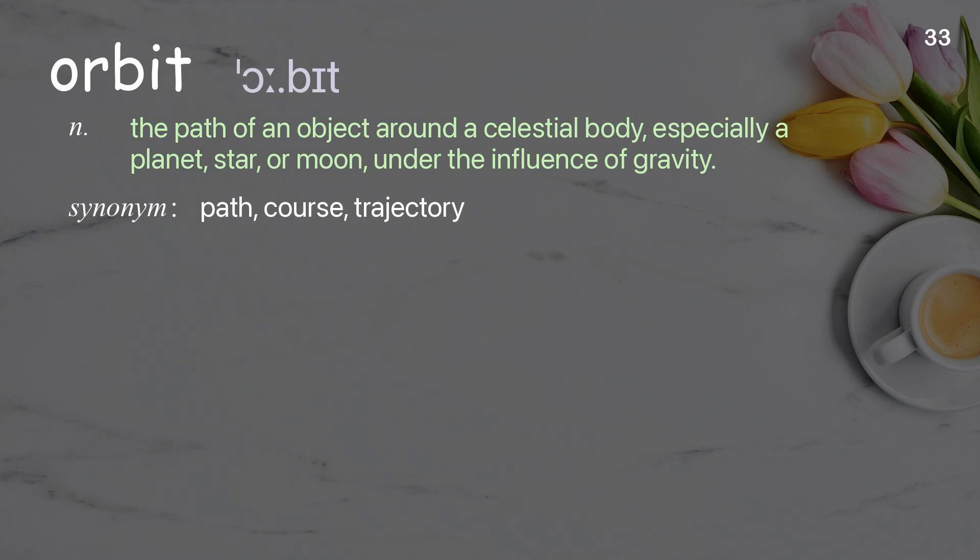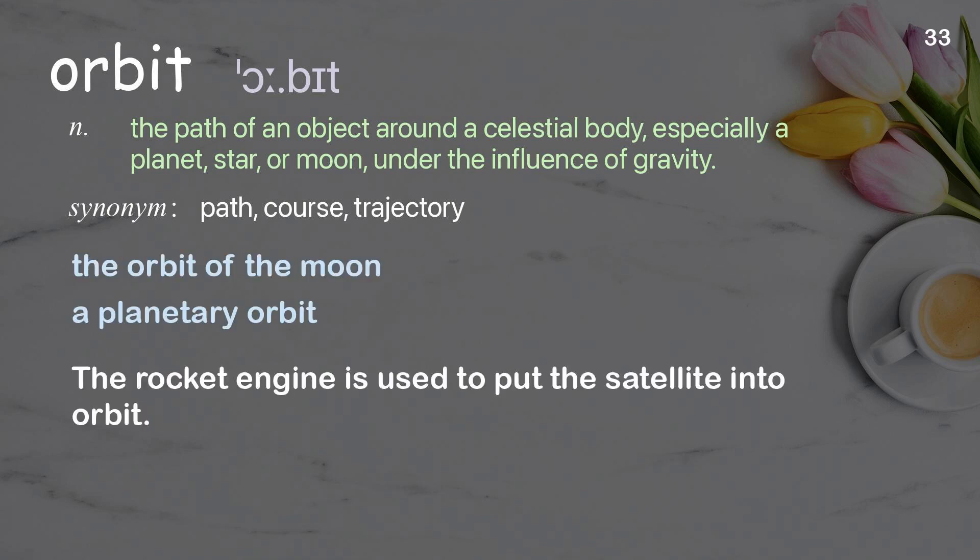Orbit: the path of an object around a celestial body, especially a planet, star, or moon, under the influence of gravity. Examples: the orbit of the moon, a planetary orbit. The rocket engine is used to put the satellite into orbit.